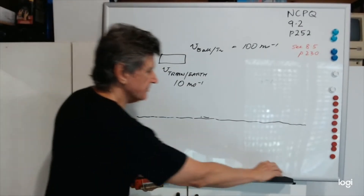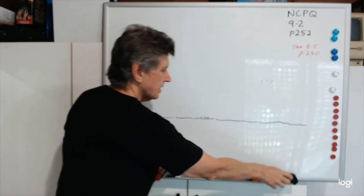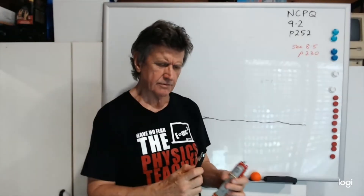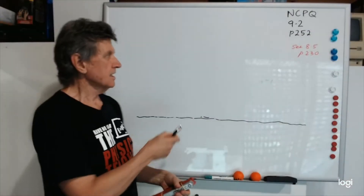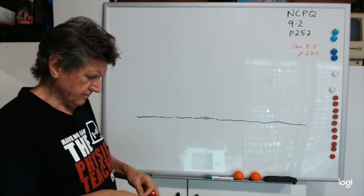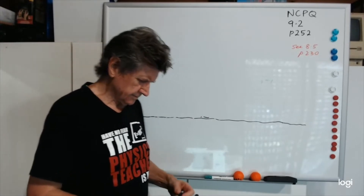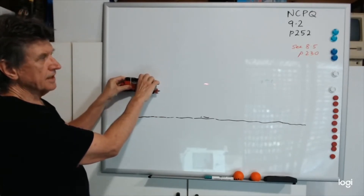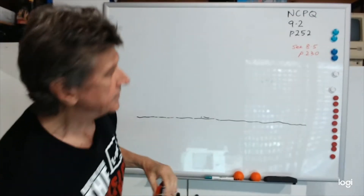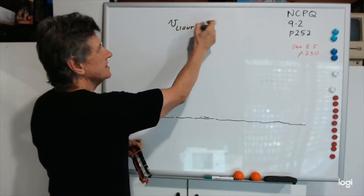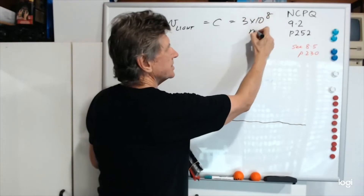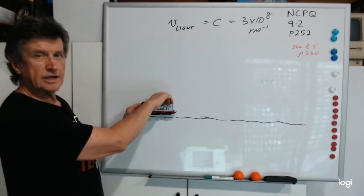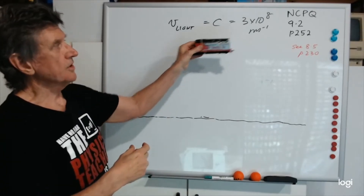Now let's repeat this but instead of a cannon, imagine a beam of light — a laser pointer on top of the train. The velocity of light equals c, which is 3 × 10⁸ m/s. That beam of light leaves the train at 3 × 10⁸ m/s relative to the train.